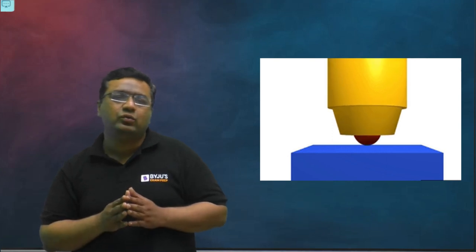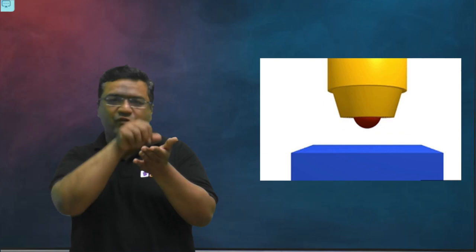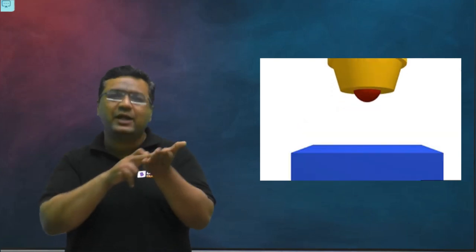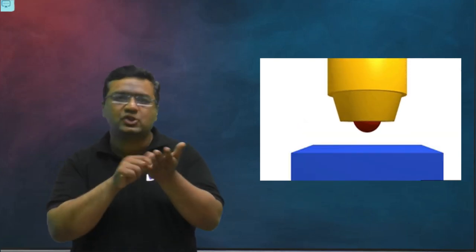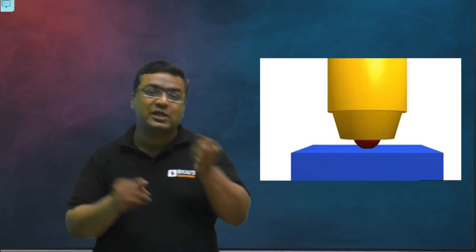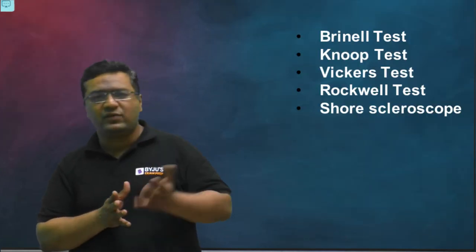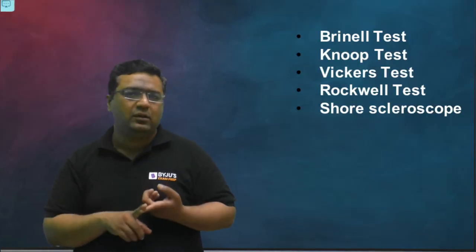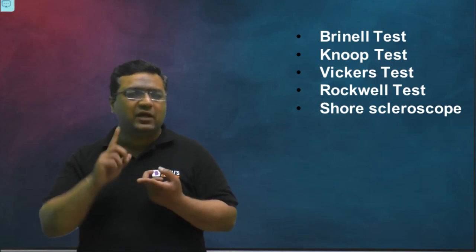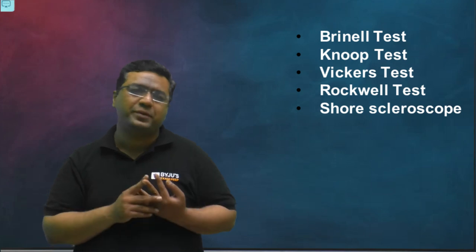Whenever you are going to take, let's say your nail, you try to just pass it from the skin, you will get some kind of scratch because skin is softer. If you try the same thing onto the wall or some hard thing, the scratch will come onto the nail, not on that body. For hardness there are a number of tests which are done like Rockwell, like Brinell, like Vickers, like Shore. Shore scleroscope is there, so Knoop test is there.